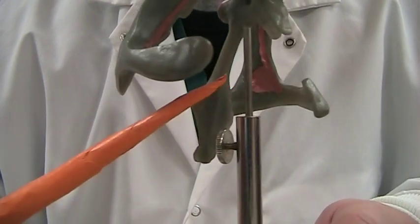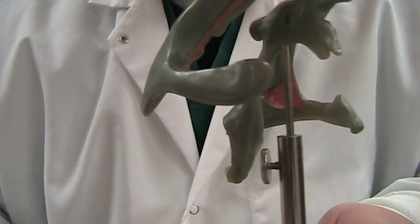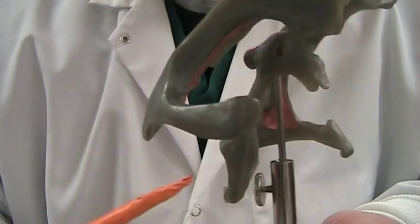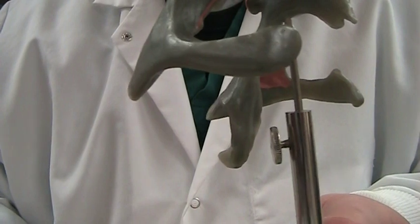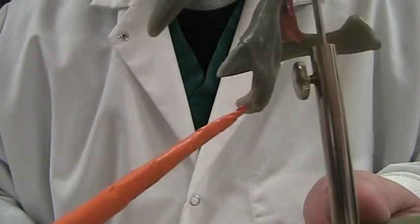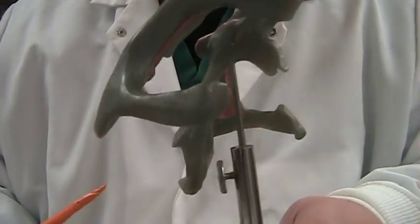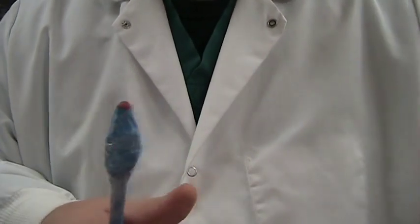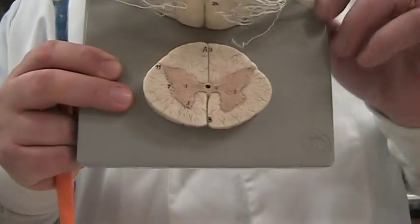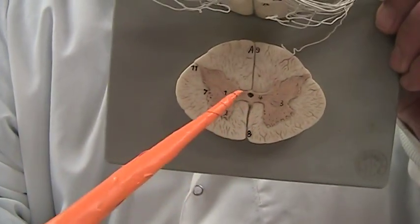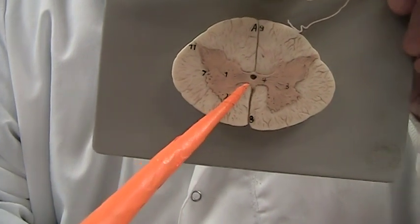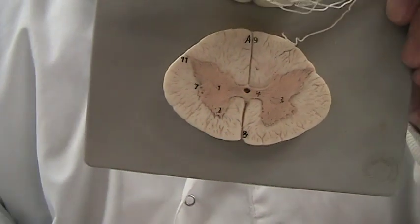Every ventricle has choroid plexus. The lateral ventricles, third ventricle, and fourth ventricles all have choroid plexus. And then it will continue down into the spinal cord. I'll just give you a reference here of a spinal cord into the central canal. Cerebrospinal fluid. Ependymal cells would actually go down inside this.